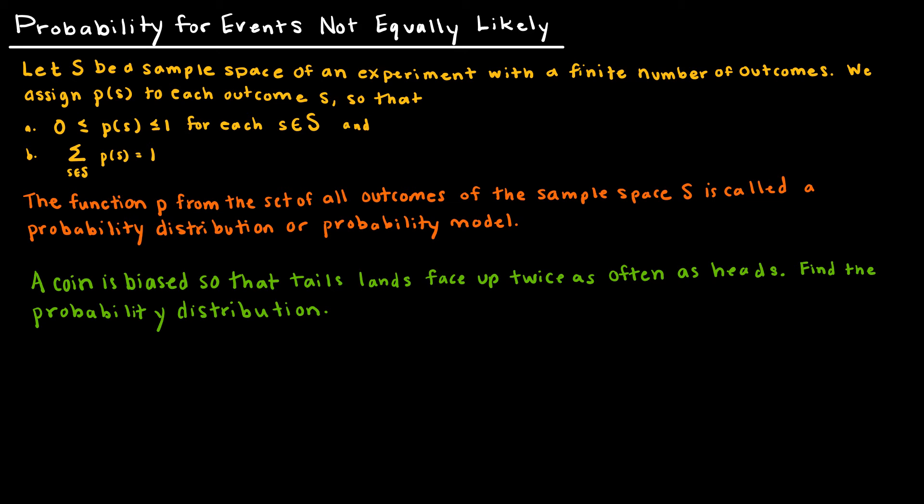We're going to look more in depth at probabilities that are not equally likely. I already talked about this a little bit in the last video, but I just wanted to formalize it a little bit, give you a nice formal definition. Let S be a sample space of an experiment. S is just the set of all outcomes, the sample space.